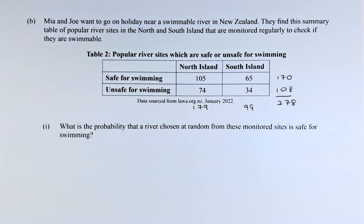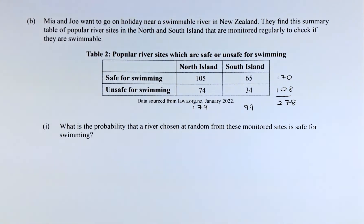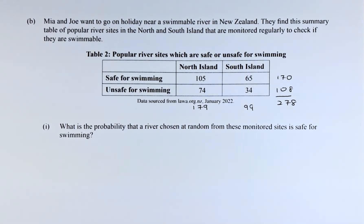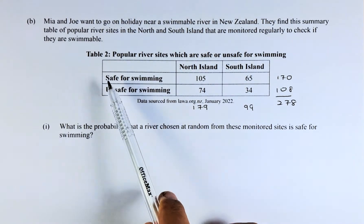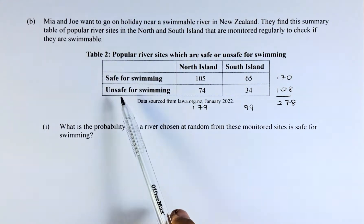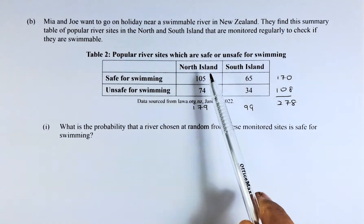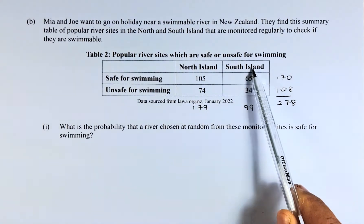Mia, Maya, and Joe want to go on a holiday near a swimmable river in New Zealand. They find a summary table of popular river sites in the North and South Island that are monitored regularly to check if they are swimmable. The rows are 'safe for swimming' and 'unsafe for swimming,' divided into North Island and South Island columns.